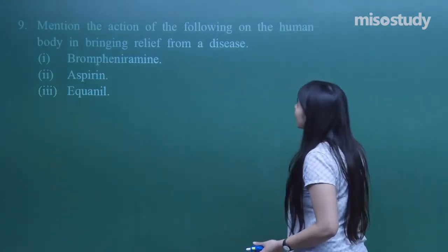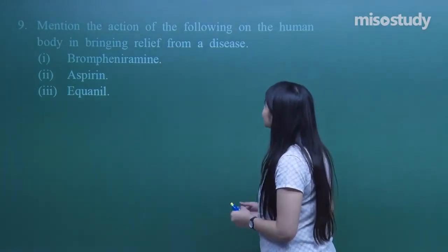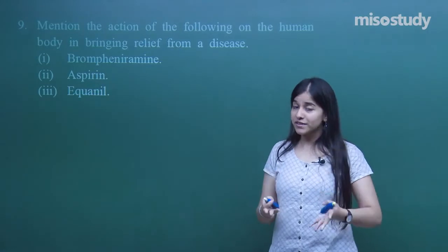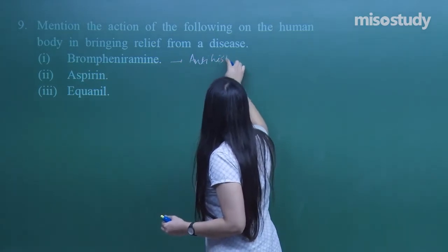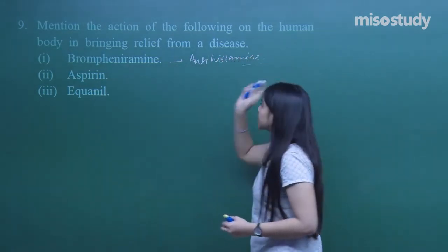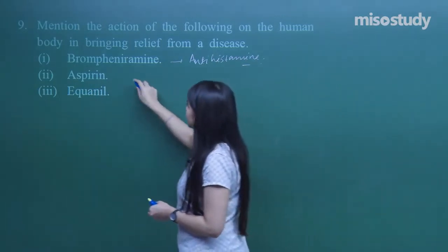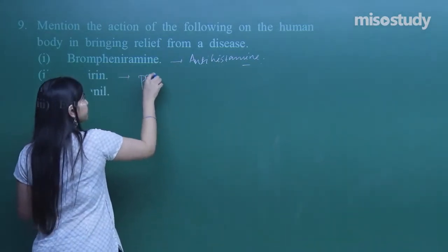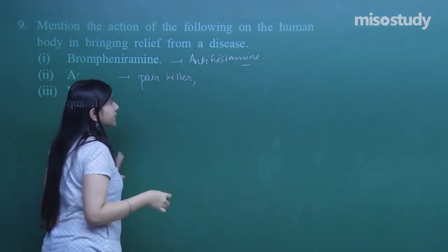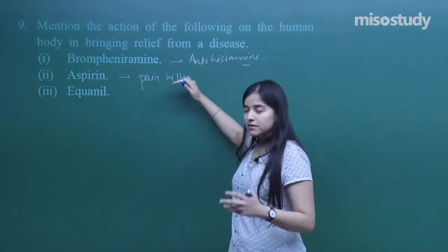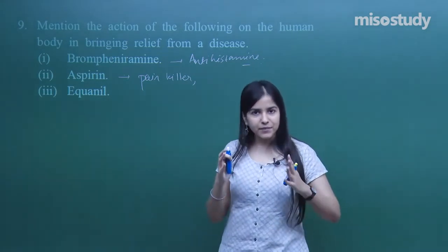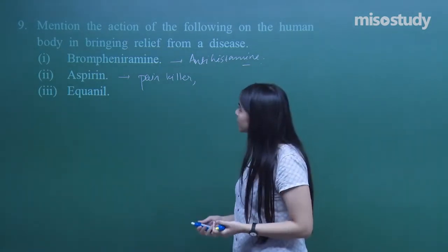Mention the action of antihistamine. We have already discussed the action of antihistamine. Aspirin, it's a painkiller but regular use and more use of aspirin can lead to liver damage. Aspirin is basically a painkiller, it is also an antipyretic that means fever reducing. Instead of aspirin, what better analgesic you can use is ibuprofen, which is a little less toxic.